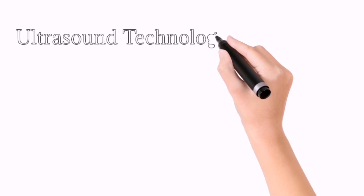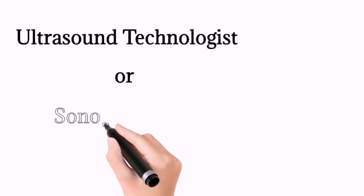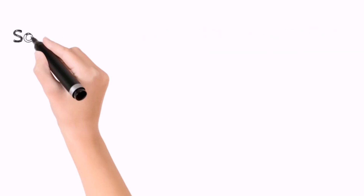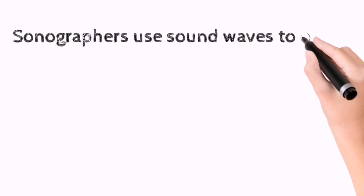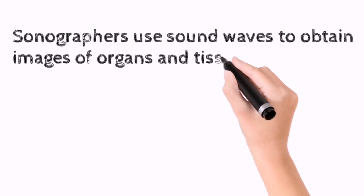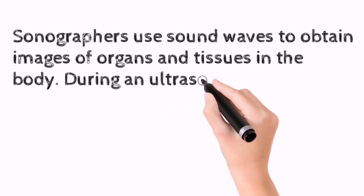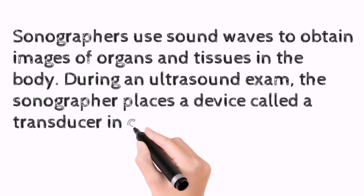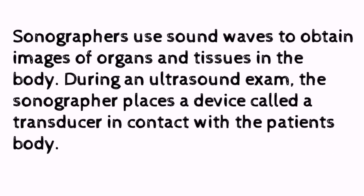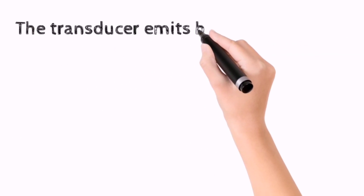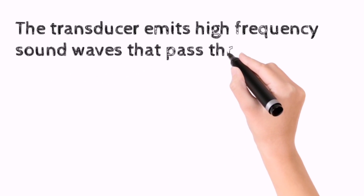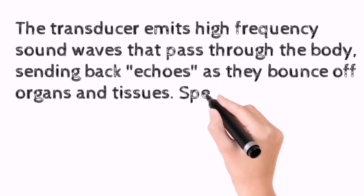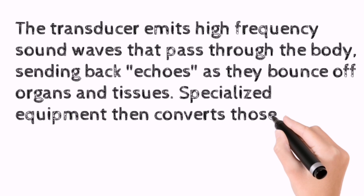A radiologic technologist can also perform ultrasound and become an ultrasound technologist or sonographer, performing non-ionizing radiation imaging. Sonographers use sound waves to obtain images of organs and tissues in the body. During an ultrasound examination, the sonographer places a device called a transducer in contact with the patient's body. The transducer emits high-frequency sound waves that pass through the body, sending back echoes as they bounce off organs and tissues, which specialized equipment then converts into visual data.